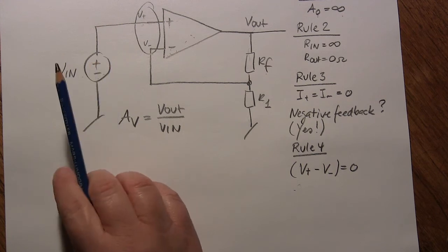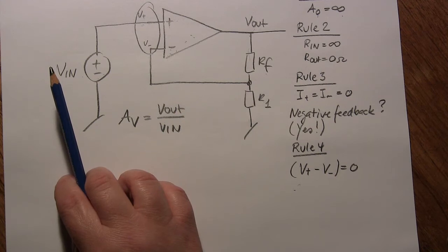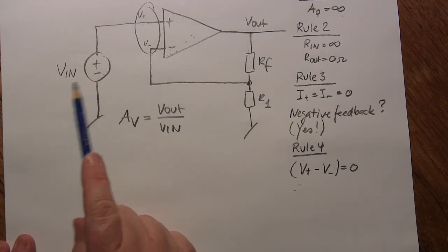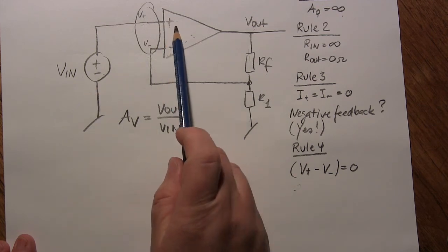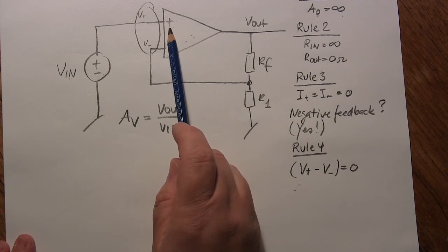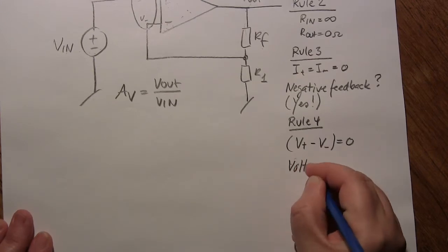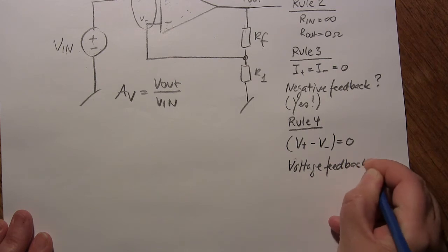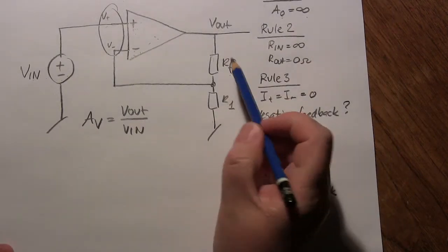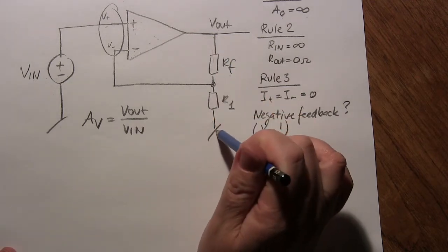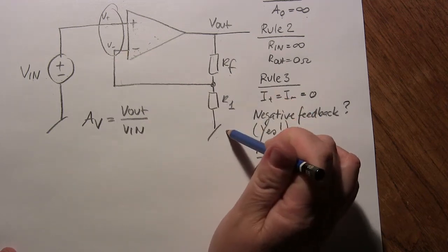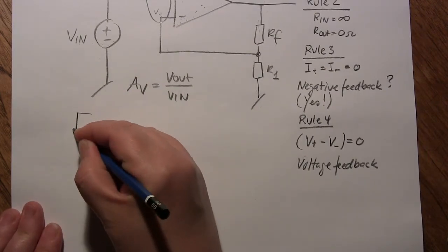Now I know I have negative feedback and a virtual ground. I have to find out the type of feedback — we have two types: voltage feedback and operational feedback. Voltage feedback is when VIN as the source signal is connected to the non-inverting input. We have voltage feedback here because the input signal is connected to the non-inverting input. That means I can analyze the circuit using voltages. In this case, the feedback resistors are a series connection and the midpoint voltage is fed back to the circuit — it's actually a voltage divider.